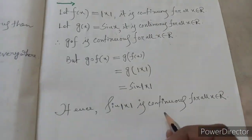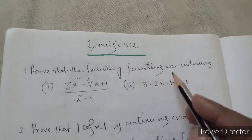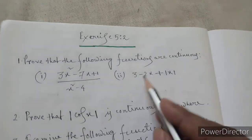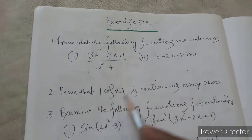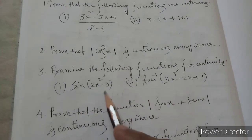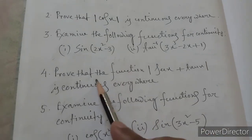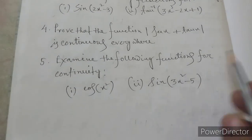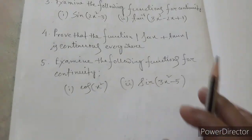Exercise 5.2 — your homework: (1) Prove the following functions are continuous: (a) (3x squared minus 7x plus 1) divided by (x squared minus 4), (b) 3 minus 2x plus mod x. (2) Prove that mod(cos x) is continuous everywhere. (3) Examine the following for continuity: (a) sin(2x squared minus 3), (b) tan inverse of (3x cubed minus 2x plus 1). (4) Prove mod(sec x plus tan x) is continuous everywhere. (5) Examine cos(x squared) and sin(3x squared minus 5) for continuity.